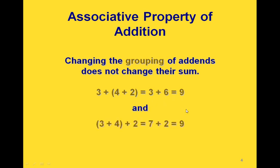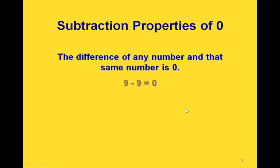The associative property says that we could also do it this way: we could group the 3 and the 4 together inside parentheses, so that we would add those first, and then add the 2 to that, and we would still get the same answer of 9.